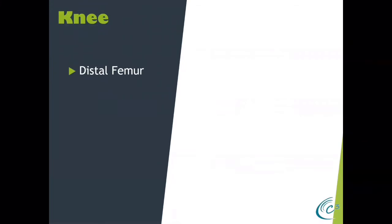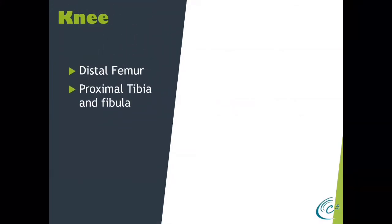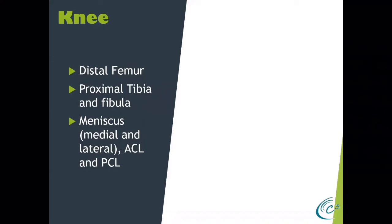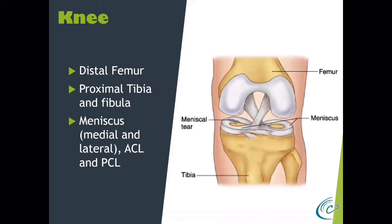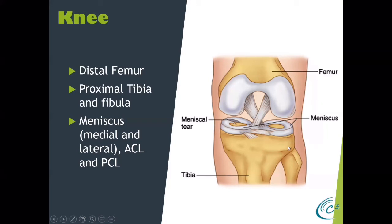Let's talk about the knee. The knee includes the distal femur, the proximal tibia and fibula, as well as the intra-articular components: the medial and lateral meniscus, the anterior cruciate ligament, and the posterior cruciate ligament. Here it is — similar to the humerus, we see these two knobby ends to the femur. This white area is the chondral surface. Here's the tibial plateau, and this is where all the weight bearing occurs. Because we have two bony structures, the body has created two shock absorbers — the meniscus: the medial meniscus on this side and the lateral meniscus.